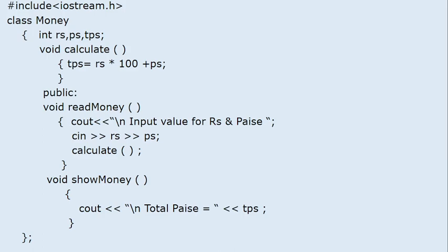Now consider this program which we covered in the first video. We are creating a money class in which we have one private member function, calculate, which will calculate total paise, and two public member functions — read money and show money. Read money takes the value of RS and PS from the keyboard, then executes calculate to find total paise, and show money displays the total paise.